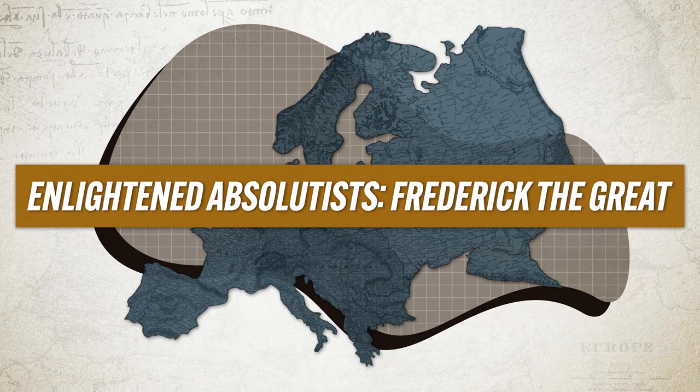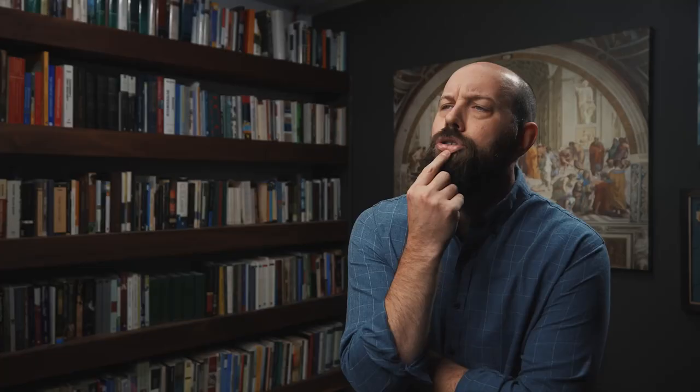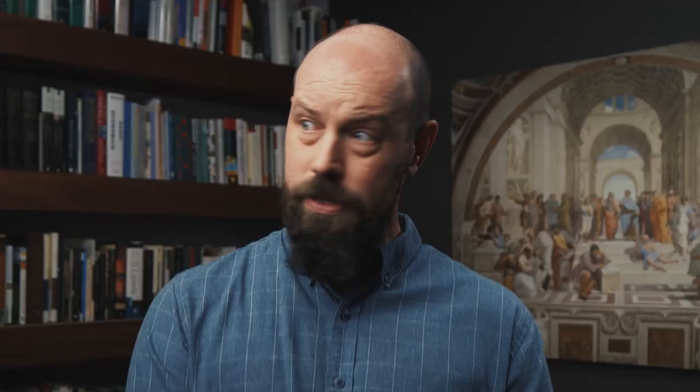Let me introduce you to Frederick II of Prussia, also known as Frederick the Great. He inherited a powerful army from his father's reign, and when you have a powerful army as an absolutist ruler, it's hard not to start thinking about killing people and taking land. So one of Frederick's first acts was to expand his territory in the style of the absolutists of old — he immediately seized the Habsburg territory of Silesia in the War of Austrian Succession, which doubled Prussia's population and significantly increased its power.